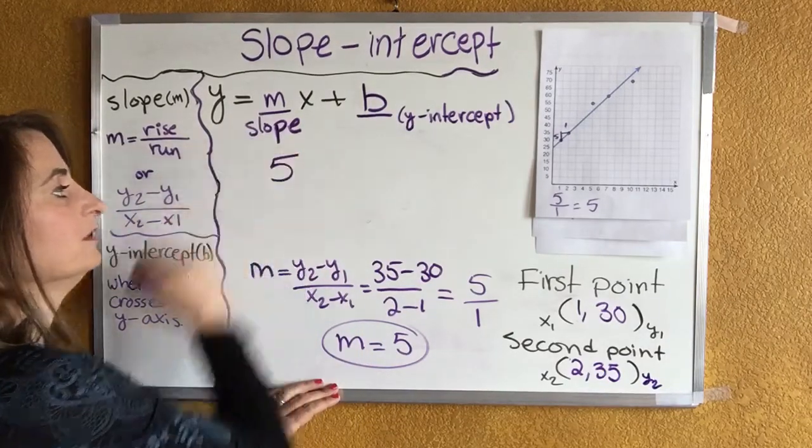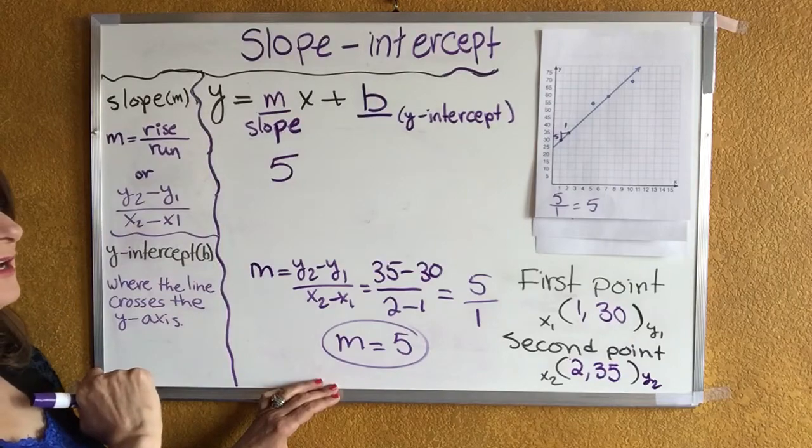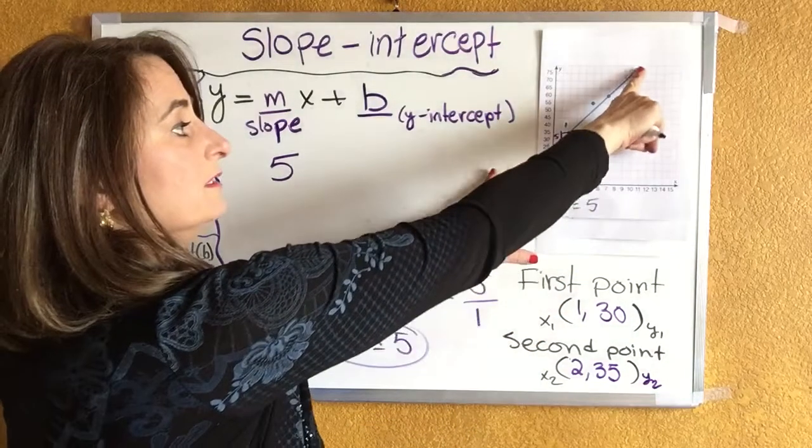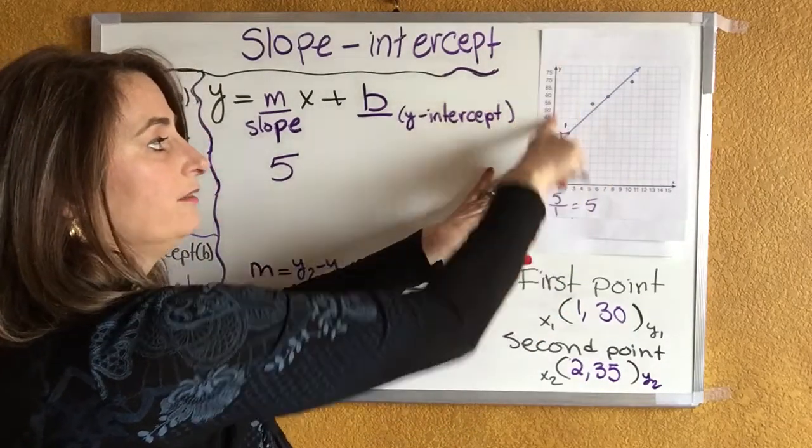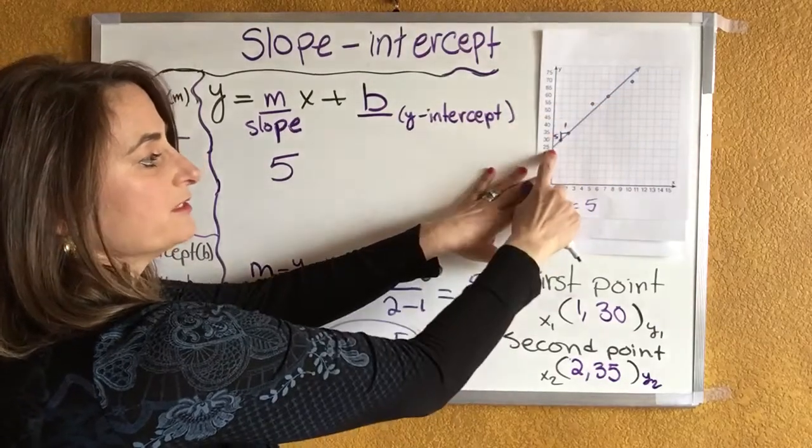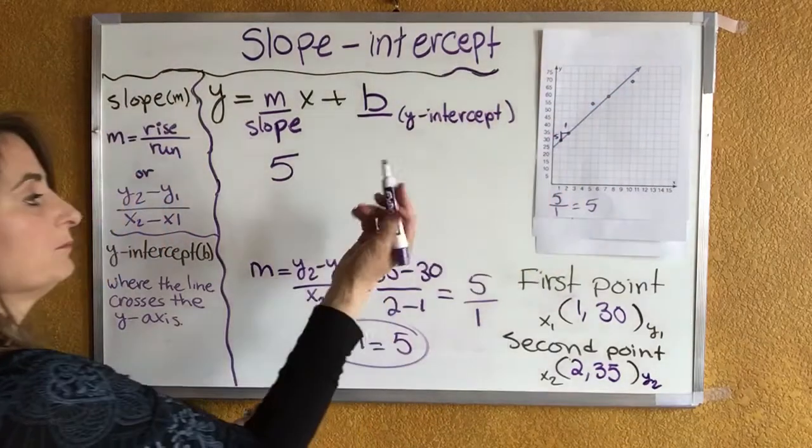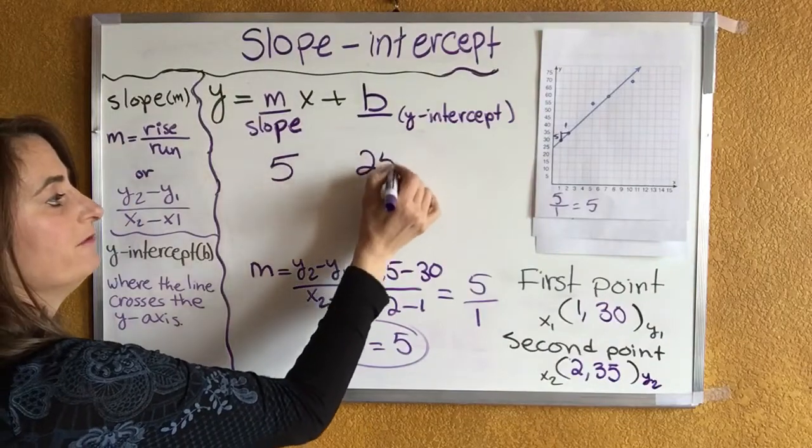Now try to find the y-intercept. Where did the line and the y-intercept meet? The line and the y-intercept met at 0, 25, so I'm going to put 25 for b.